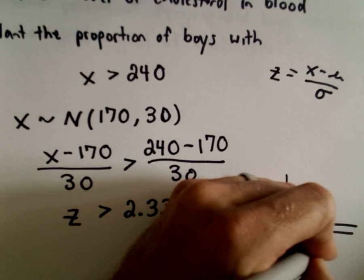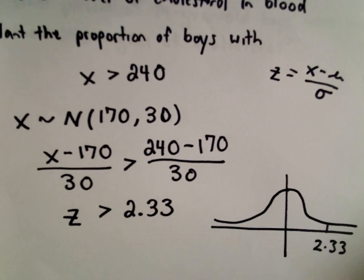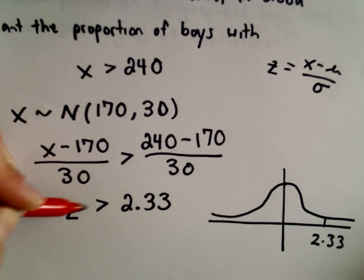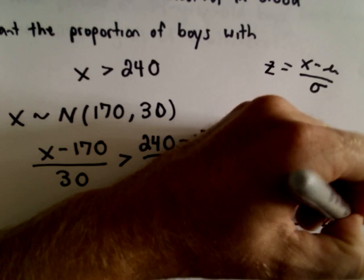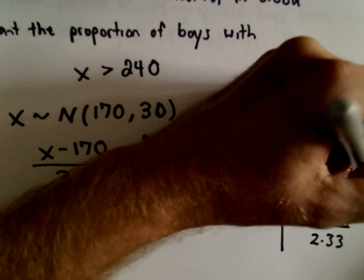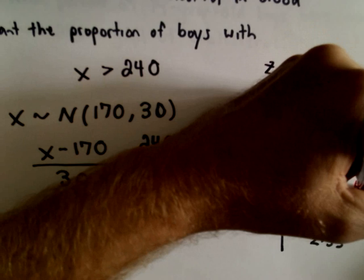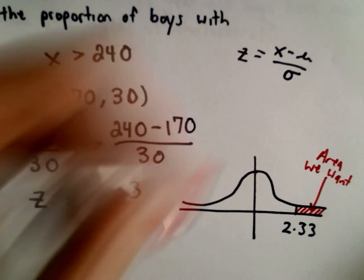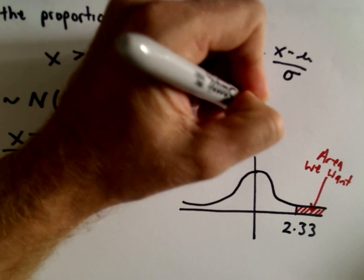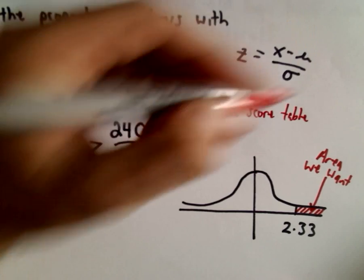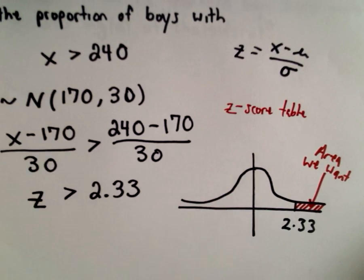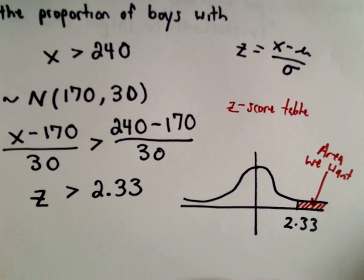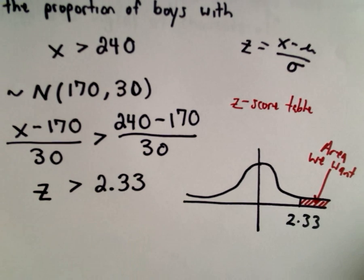Now we have to be careful. The area we're interested in, we want to figure out the area underneath the curve where it's greater than the value 2.33. So this is the area we want. Because that area corresponds to the probability. But my Z score table is going to tell us the area to the left. So we'll have to do a little bit of finagling to fix it, but no big deal.